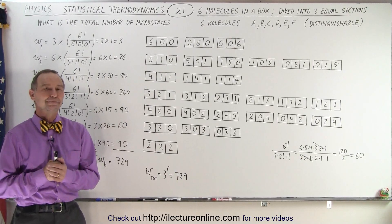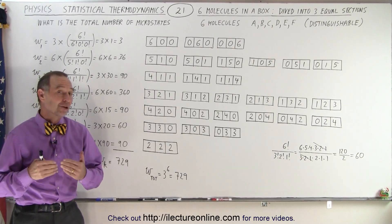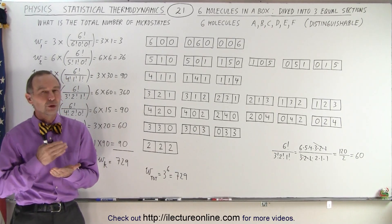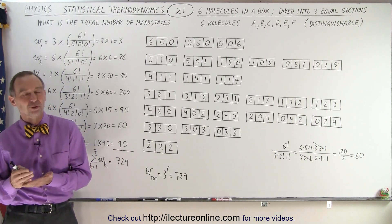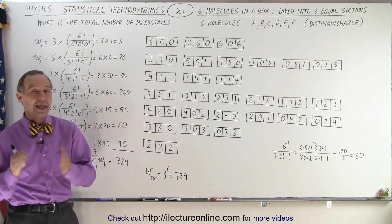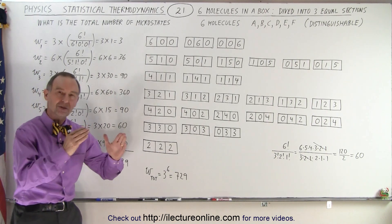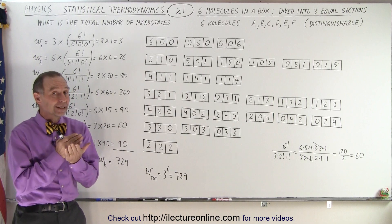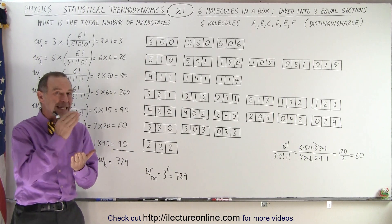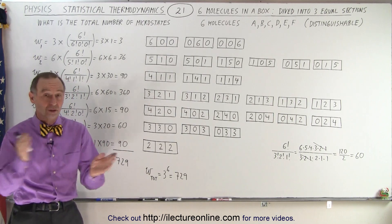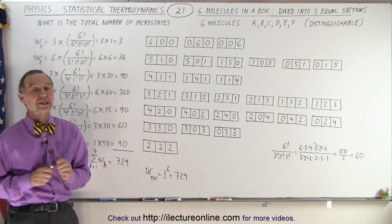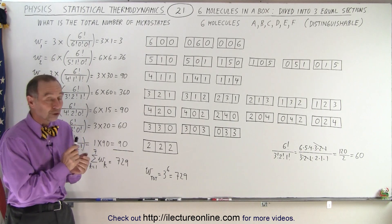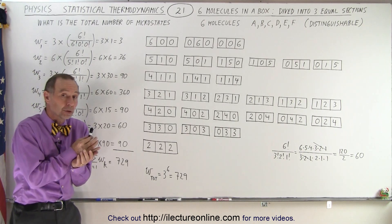Welcome to iLecterOnline. In this video, we're going to determine the total number of microstates when we have six molecules placed into a box, but the box is divided into three equal sections, and the molecules can be anywhere inside the box. Also, the molecules are distinguishable.